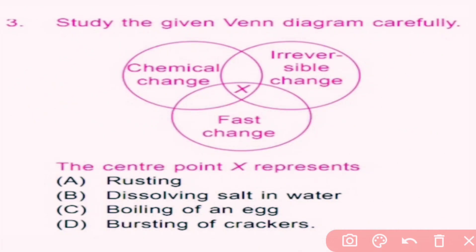Question number three: study the given Venn diagram carefully. The diagram shows chemical change, irreversible change, and fast change. The center point X represents: option A rusting, option B dissolving salt in water, option C boiling of an egg, option D bursting of crackers. Option D is correct because bursting of crackers is a chemical change, it is irreversible, and it takes place very rapidly. So X is bursting of crackers — D is correct.